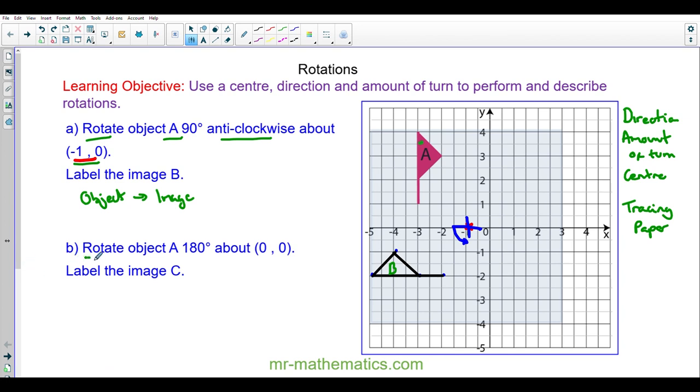For question B, rotate the object A 180 degrees. That's our amount of turn. Here's our center. But you see we don't have a direction.